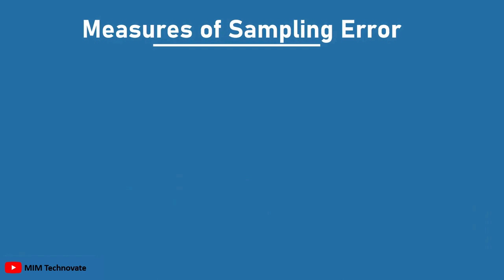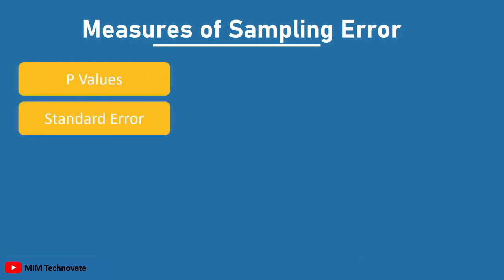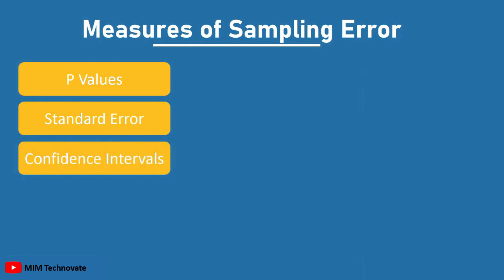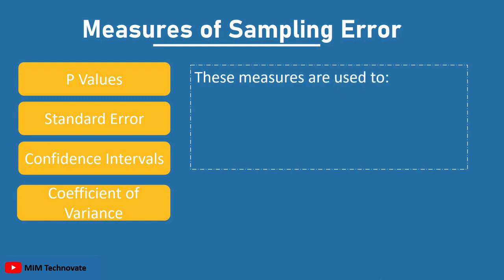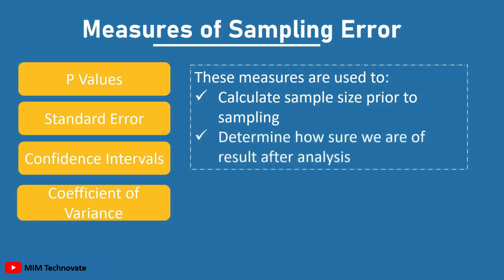There are various ways to measure sampling error: p-values, standard error, confidence intervals, and coefficient of variance. These measures are used to calculate sample size prior to sampling and to determine how sure we are of results after analysis.